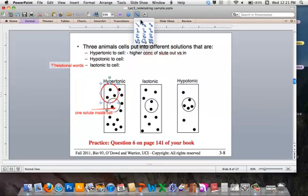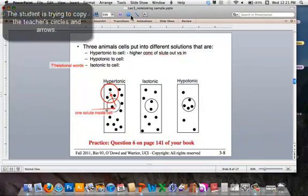Hypotonic to cell means you have a lower concentration of solute out than in. So we have a low concentration of solute out and a high in. And therefore, in the same volume, right, we see a single solute molecule compared to four. And therefore, we know that water flows in.